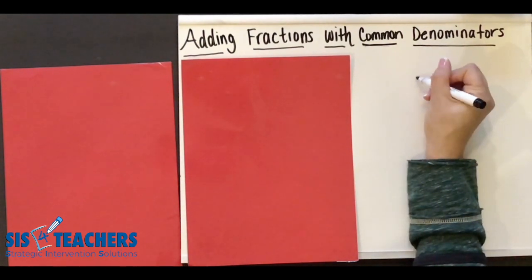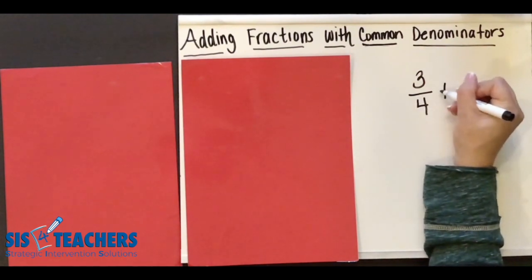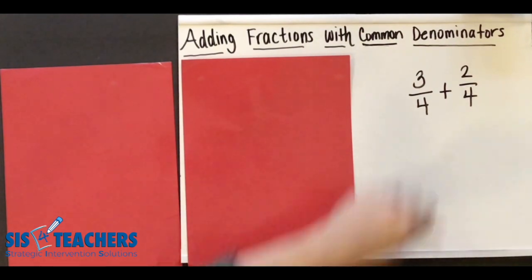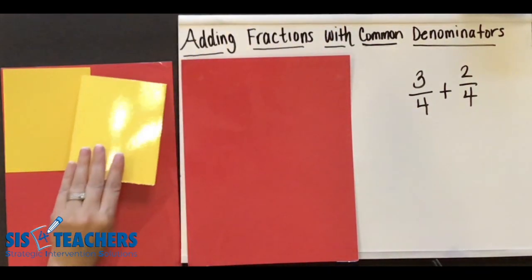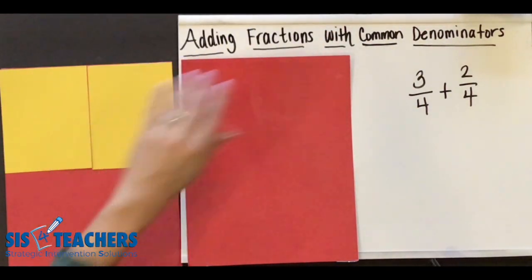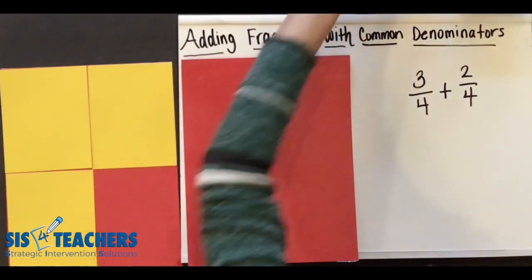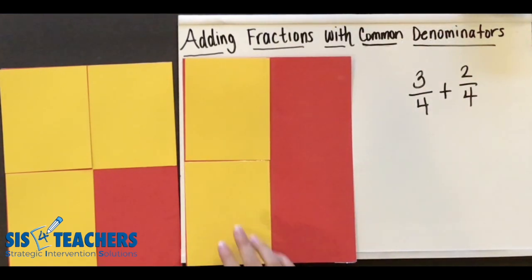Let's take a look if we had three fourths plus two fourths. So I'm going to build this on one side. Our yellow is going to be equal to four since that's going to cover my whole. Over here, I'm going to show that I have three fourths, and over here I'm going to put that I have two fourths.